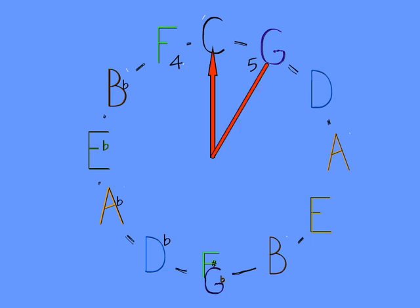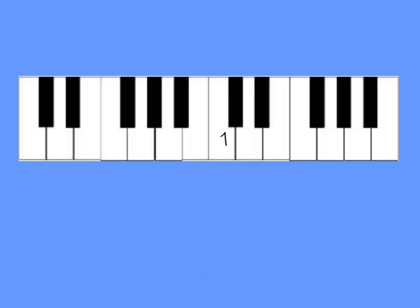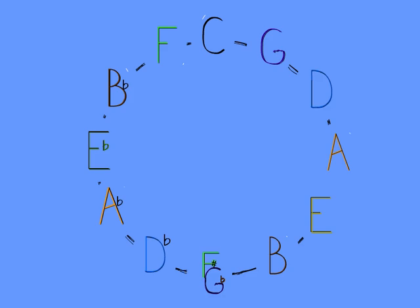We've seen that the 1 and 5 notes often pair up, but what about the 1 and 4 notes? Remember that we go down the notes as often as we go up, and going down from C, F is the 5 note.